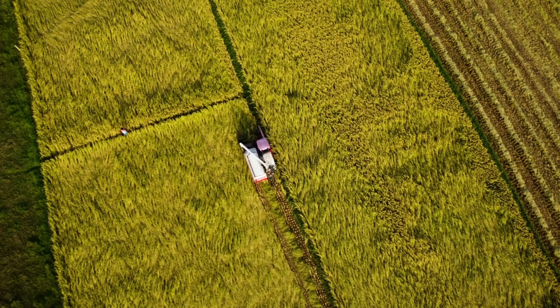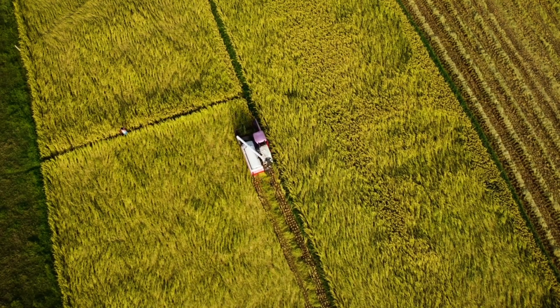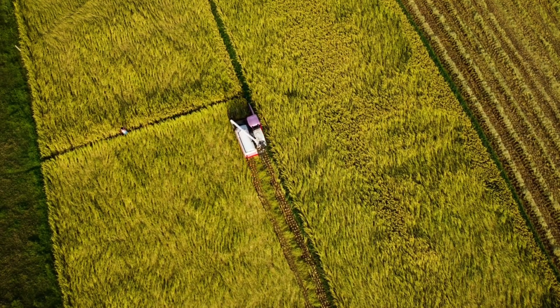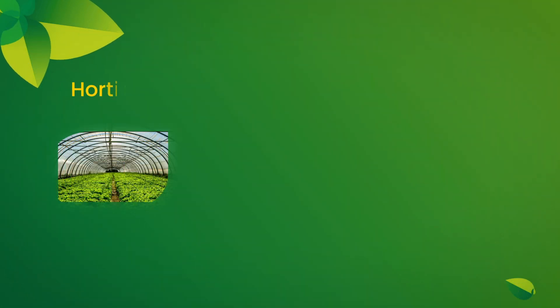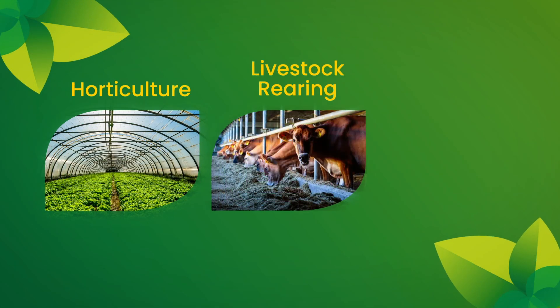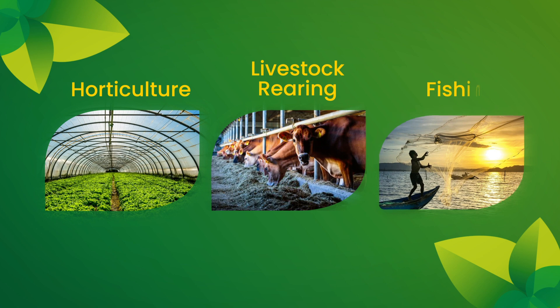India largely depends on the agriculture sector. It has been here in the country for thousands of years. It also involves horticulture, livestock rearing, and fishing.